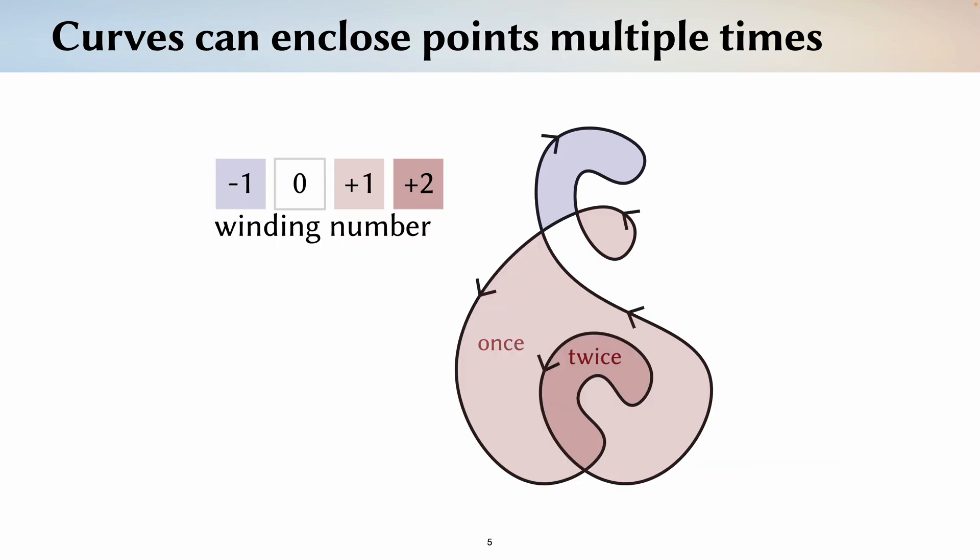Beyond inside and outside, a point can also be enclosed by a curve multiple times. So more generally, we don't just want a binary inside and outside classification, but rather an integer-valued function. And this function is called the winding number.